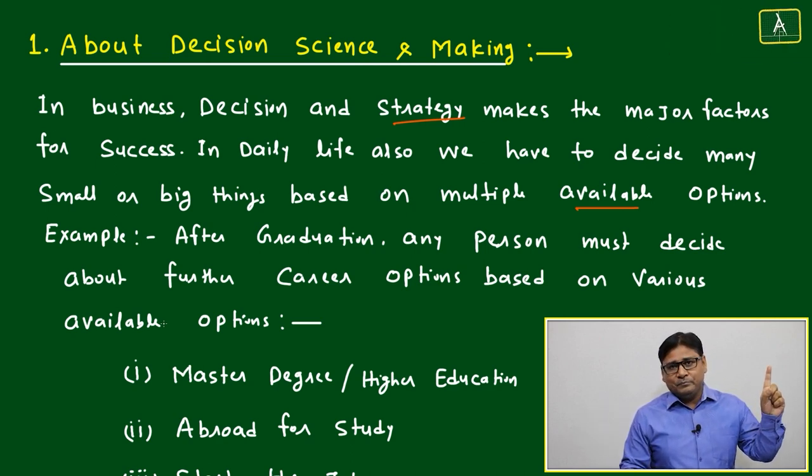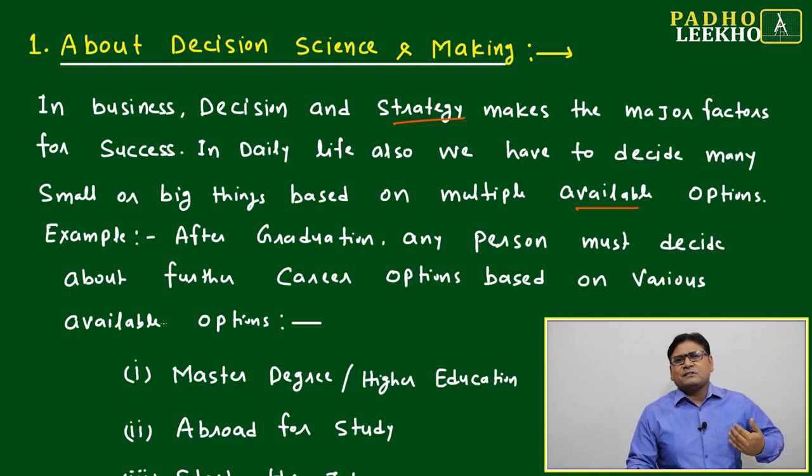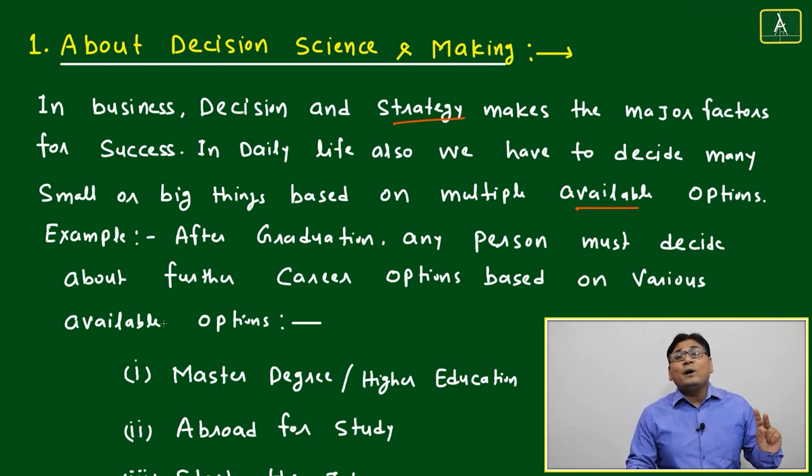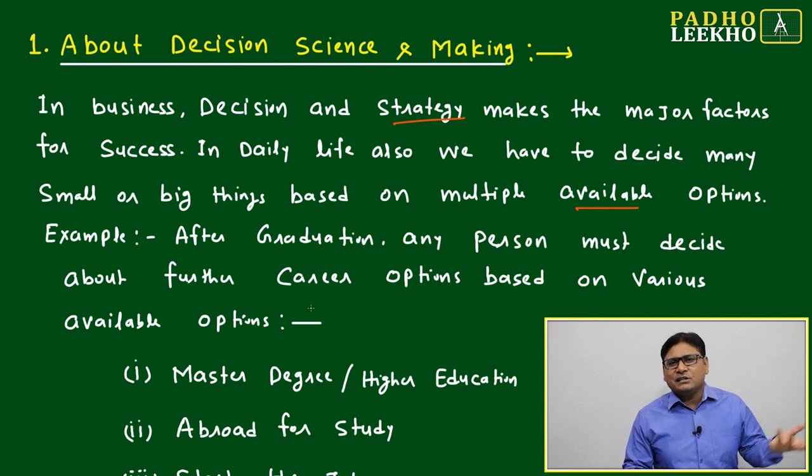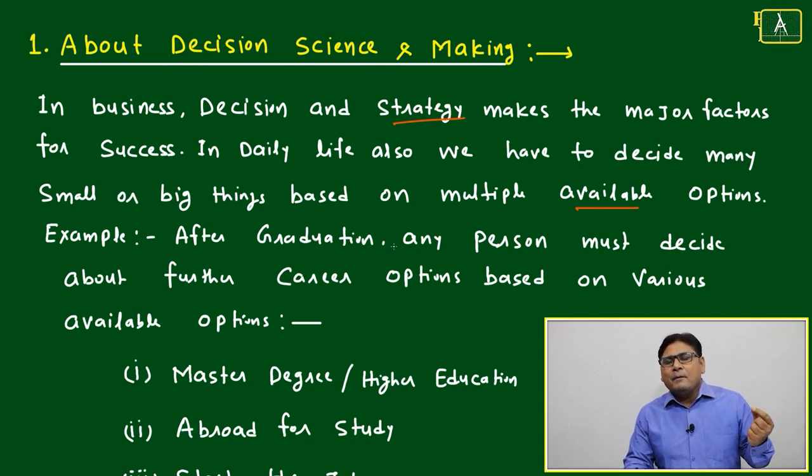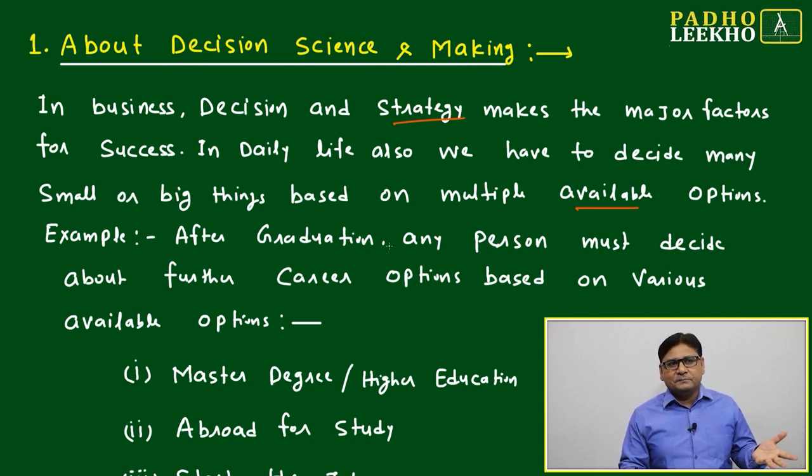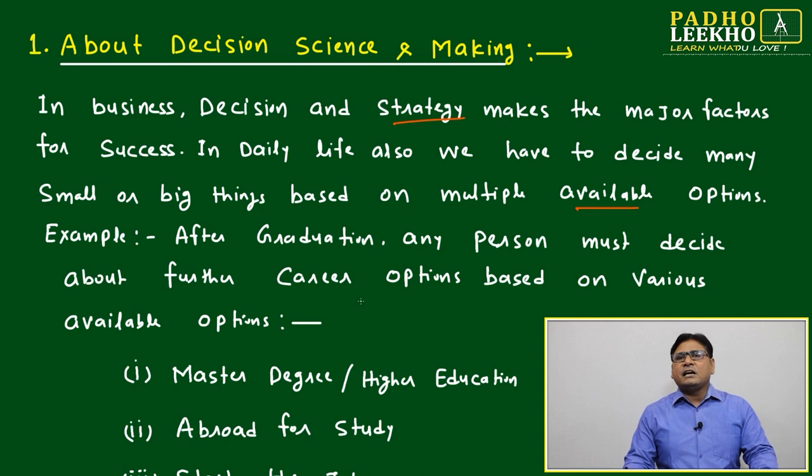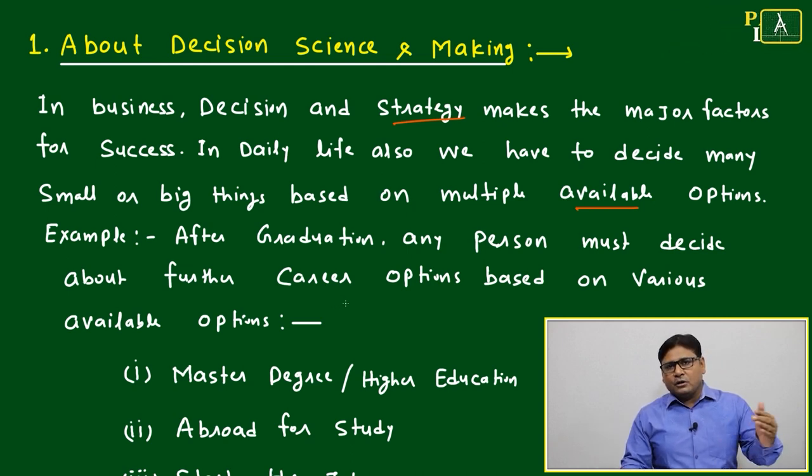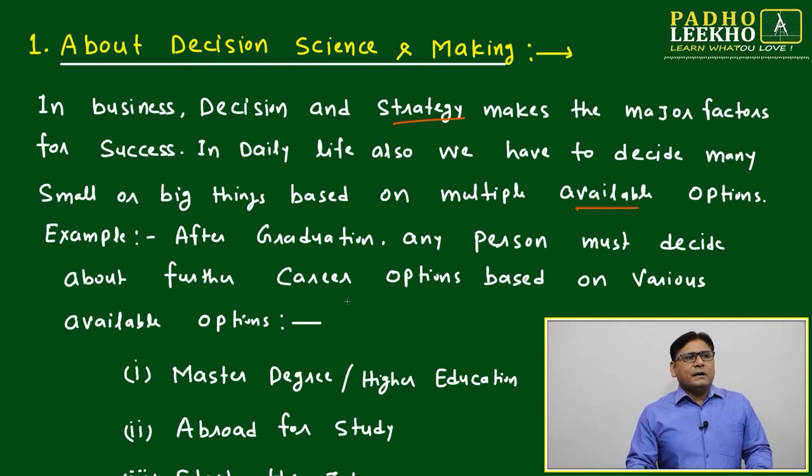If you want to do MBA, then do it at any cost. This is my personal commitment - if we want to do anything, do it at any cost. Don't go back once you decided. Do it. What will happen? Nothing is going to happen. Nothing can be much more grievous than life itself. If we are able to survive, we can do anything. After graduation, any person must decide about further career options based on various available options. Many people will give you guidance at that point - parents, relatives, seniors will provide you sufficient input on how to arrive at the decision.